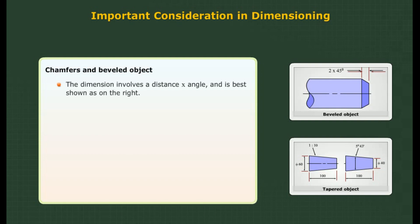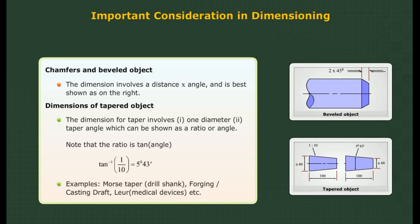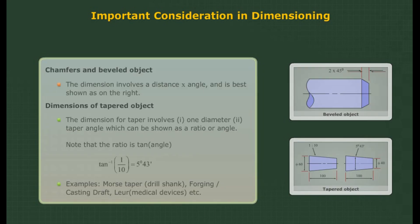Chamfers and bevelled objects: The dimension involves a distance and angle and is best shown as illustrated. Dimensions of tapered objects: The dimension for taper involves a diameter and a taper angle, which can be shown as a ratio or angle. Note that the ratio is tan inverse, for example 1 by 10 equals 5 degrees 43 minutes. Examples include Morse taper, drill shank, forging or casting draft, and medical devices.